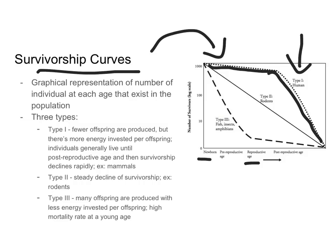This is because individuals like humans take really good care of their young. We have very few offspring and we invest a lot of energy into helping those offspring survive. So fewer offspring are being produced, but there's more energy invested per offspring, and individuals generally live until post-reproductive age. Most mammals follow type one survivorship curves.